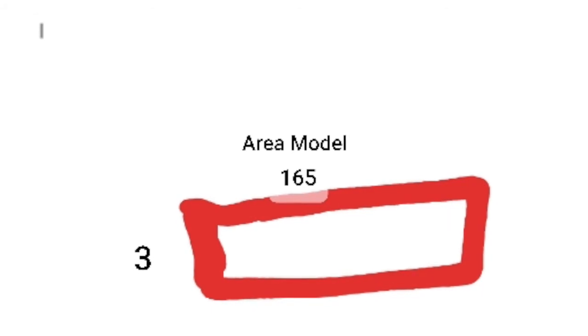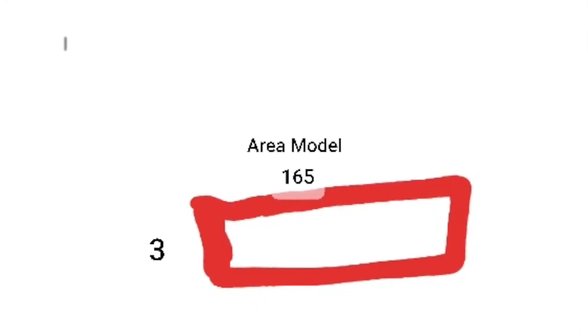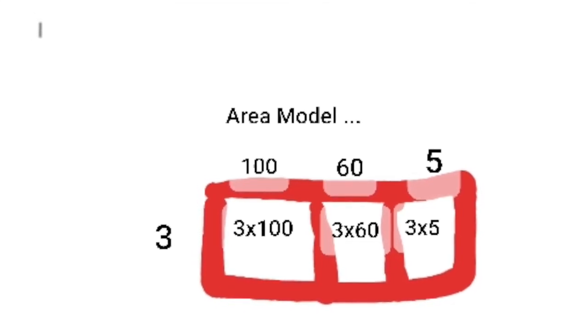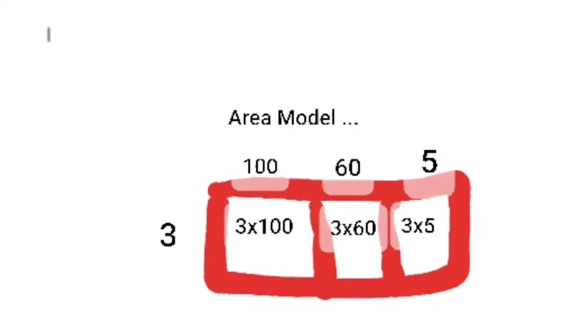Then we can find an area model of that. The area model is you draw a rectangle: 3 times 100, 3 times 60, 3 times 5. That's each place value.